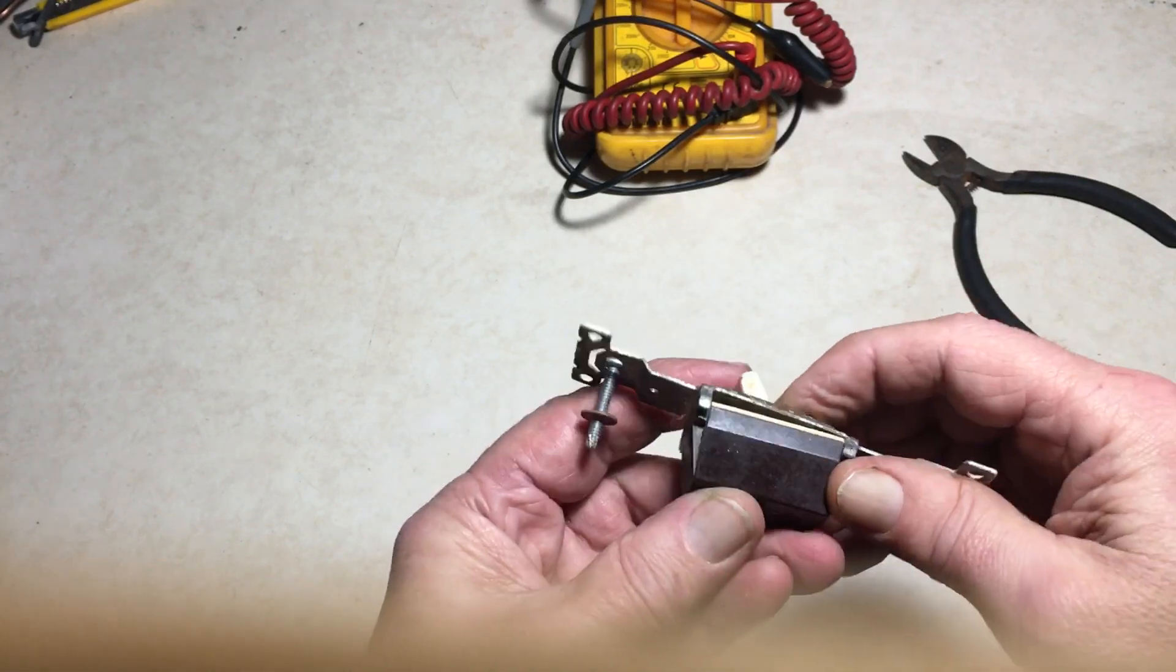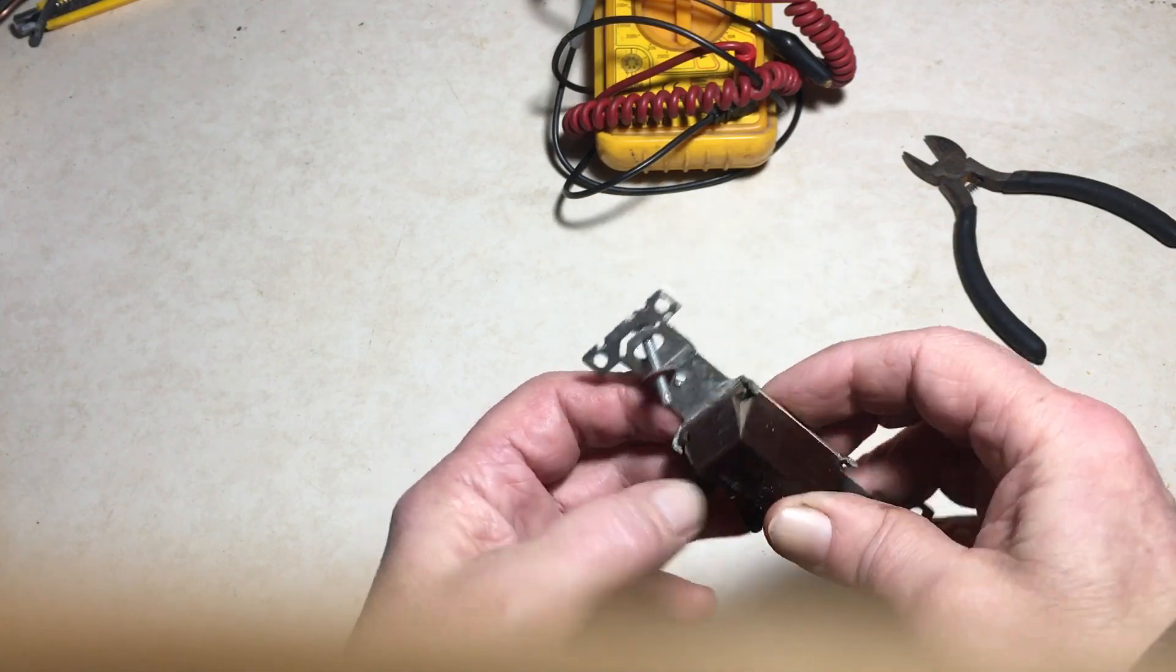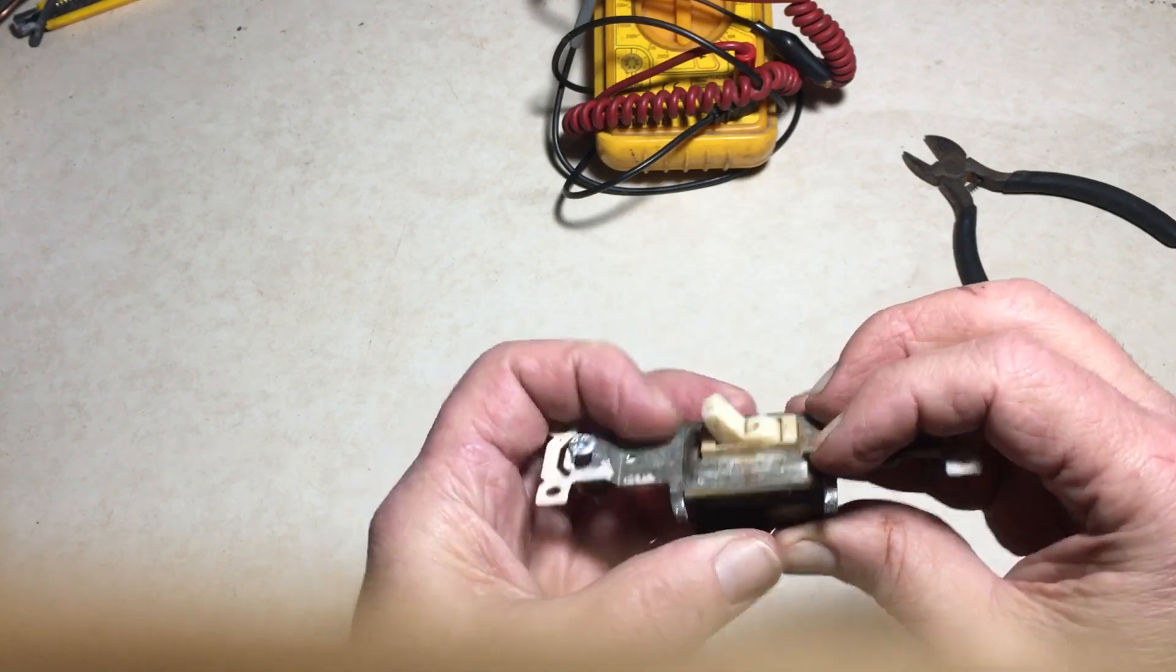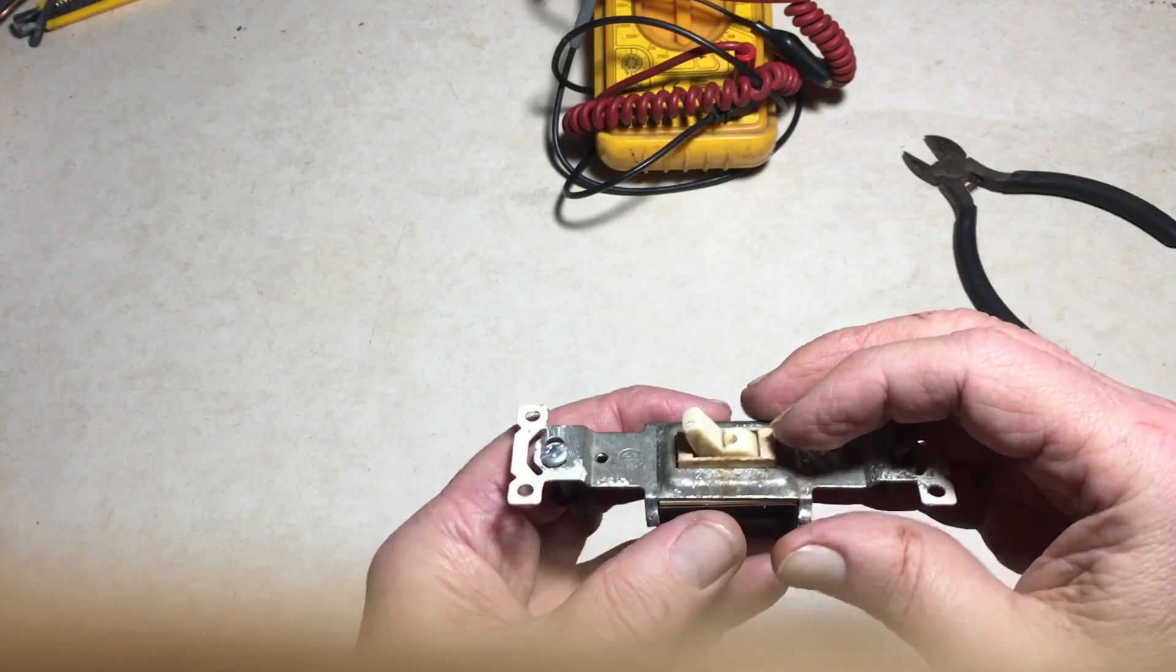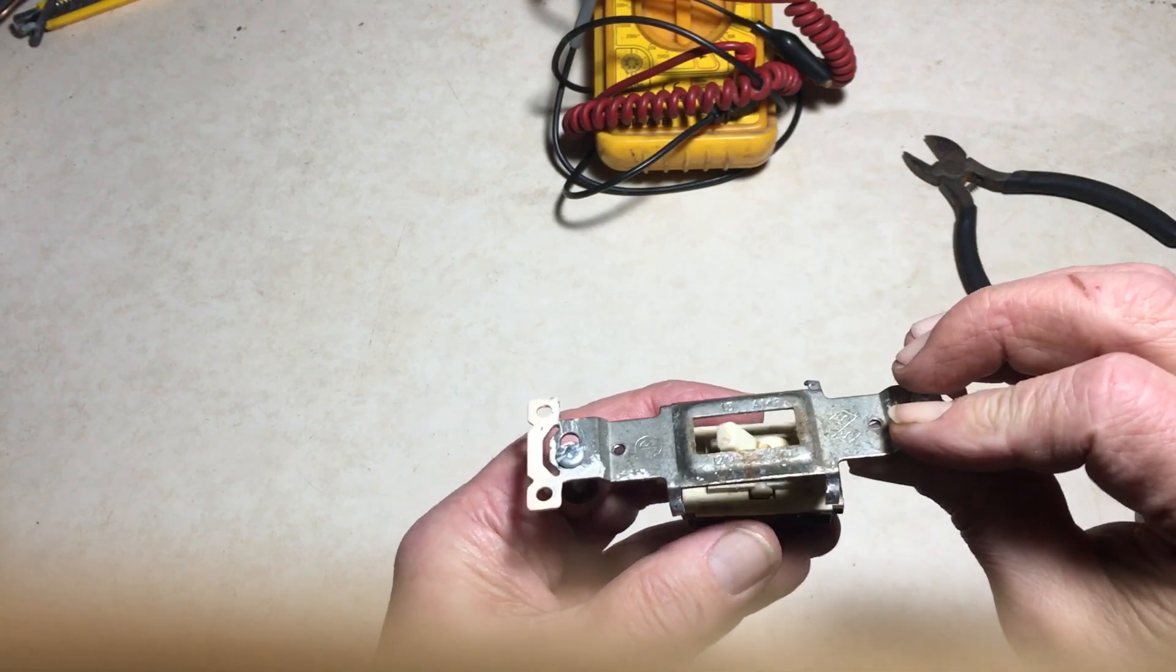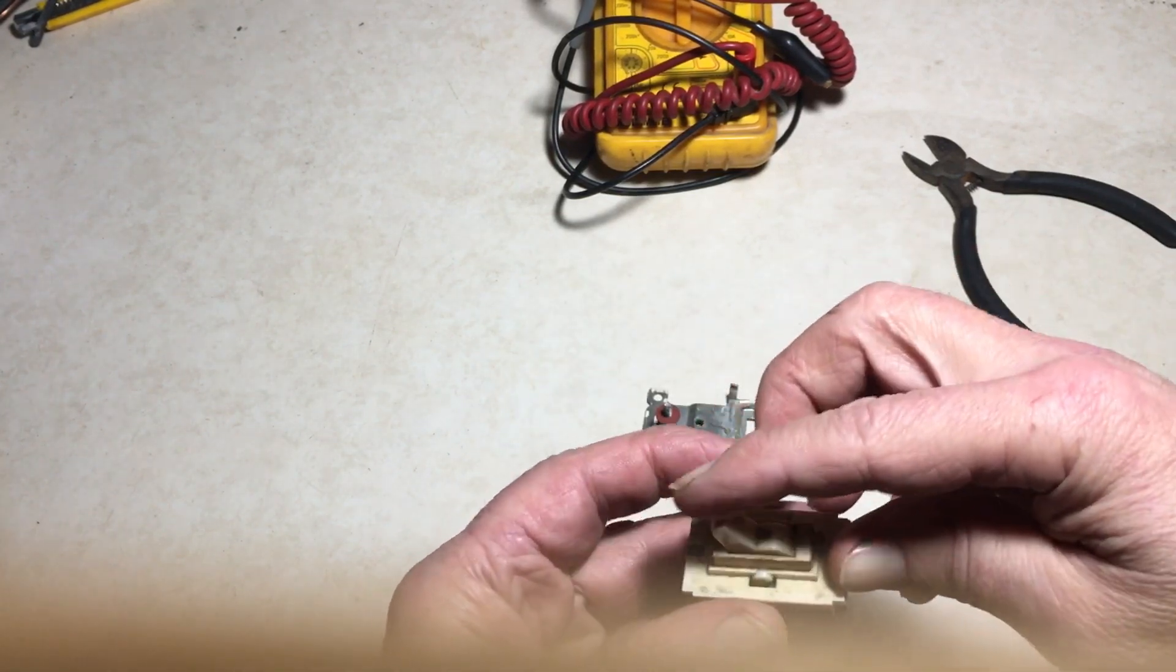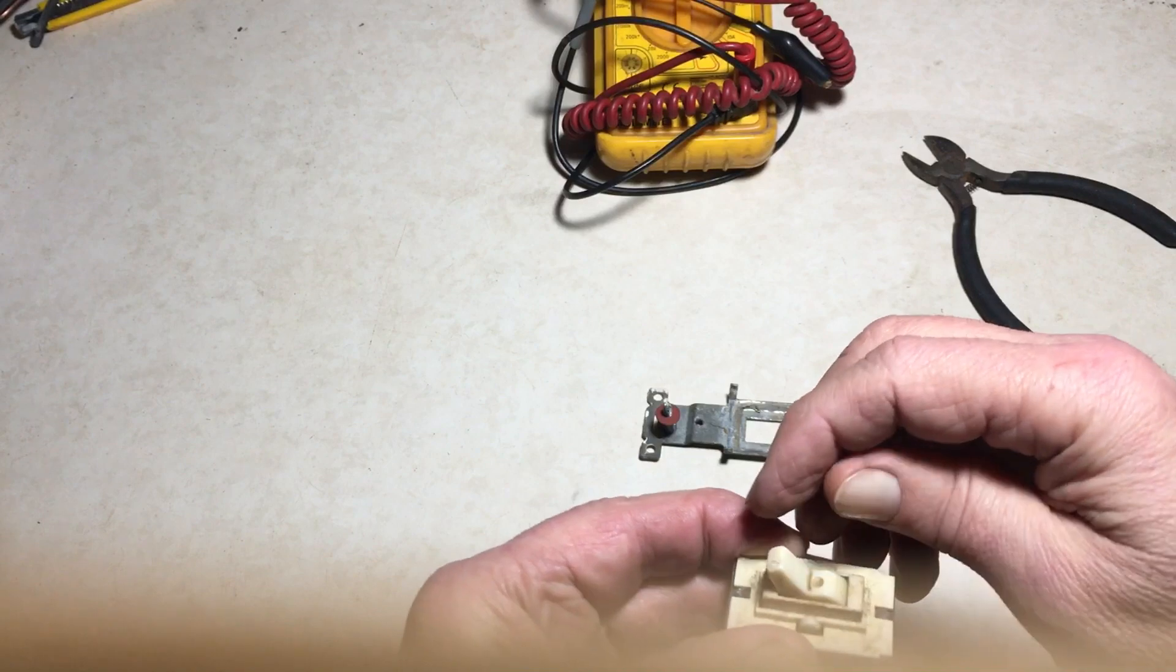There's four tabs that kind of hold it on, hold it all together - the metal part to the rest of the body of the switch. That can be removed. You buckle back those tabs, and this is the rocker arm of course that activates the switch.